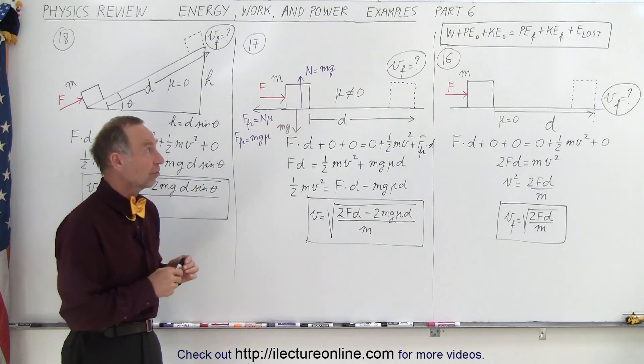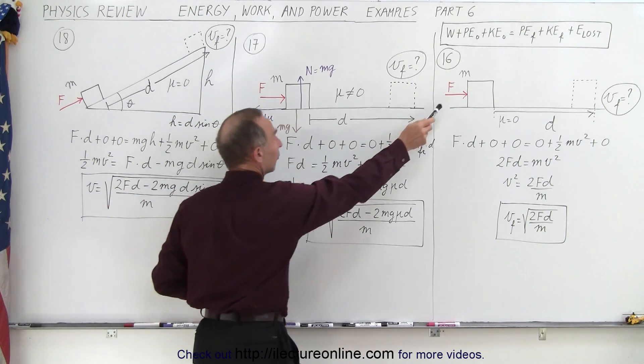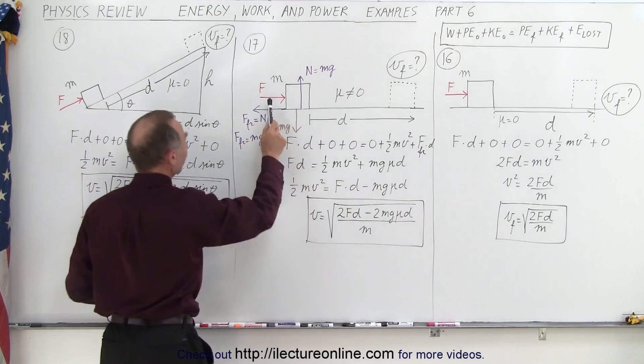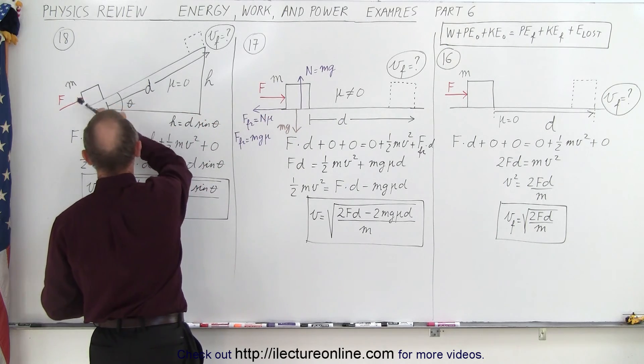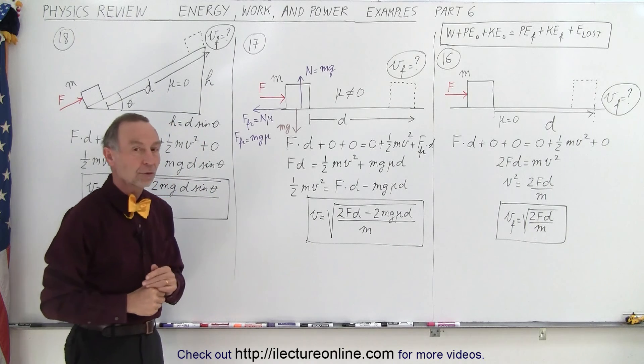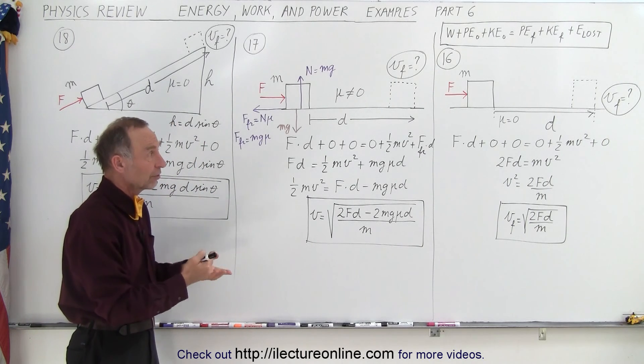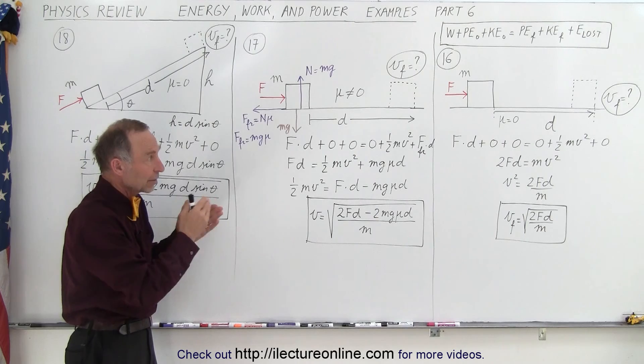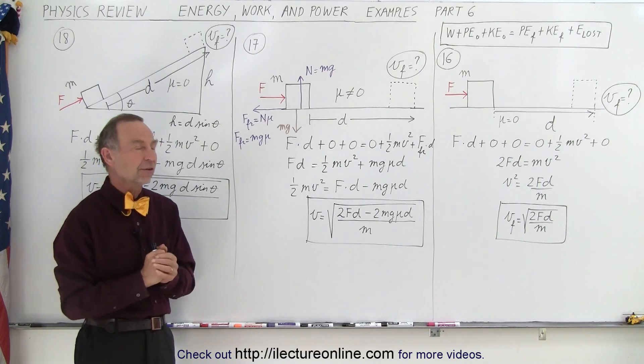we have work put into the system because you can see we have a force acting on the mass right here, a force acting on it here, and a force acting on it there over a particular distance. So what we're trying to find is the final velocity of the system after the force has acted on the object over a particular distance.